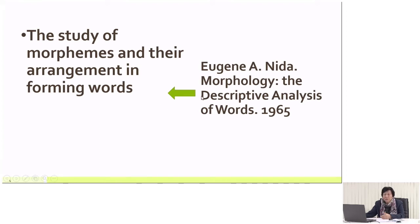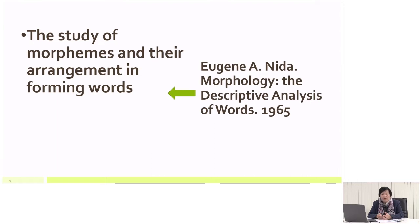According to Nida's book, Morphology: The Descriptive Analysis of Words, he said that morphology is the study of morphemes. Now we have the technical term morphology. Morphology is actually a biology term originally. And then we come to a new term: morphemes. So morphology is the study of morphemes and their arrangement in forming words. The two key terms we need to clarify are morphemes and words — they are closely related.